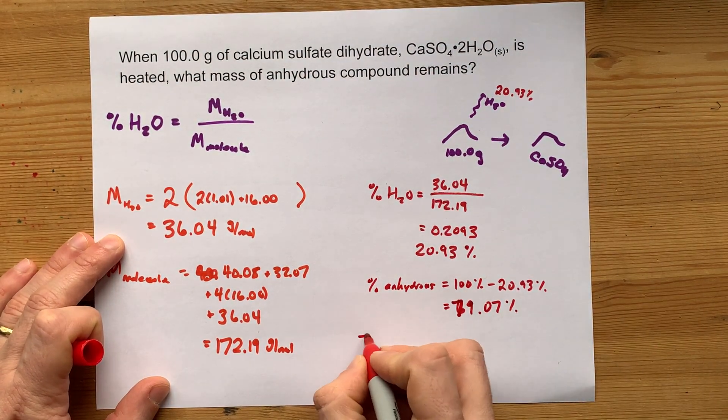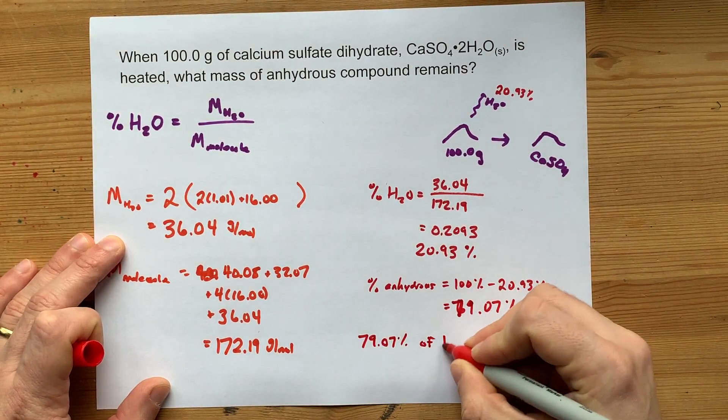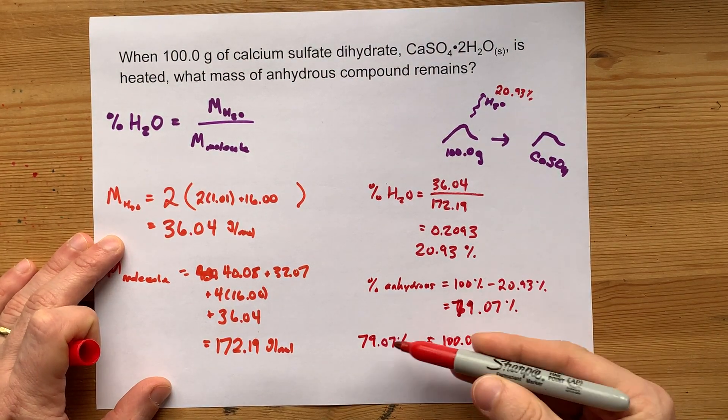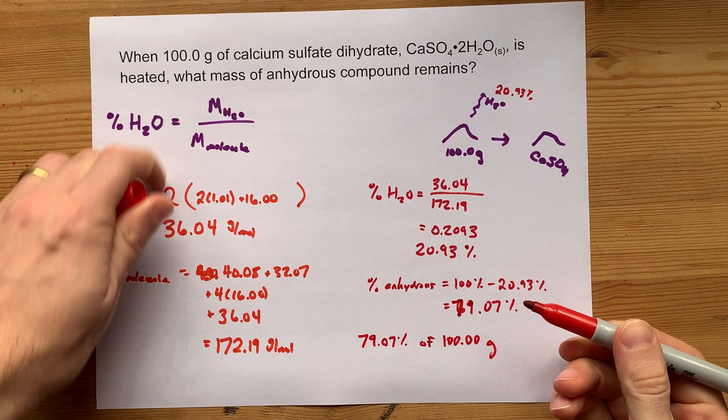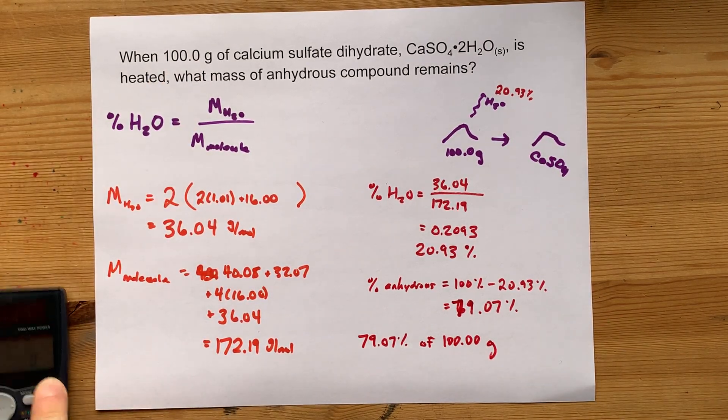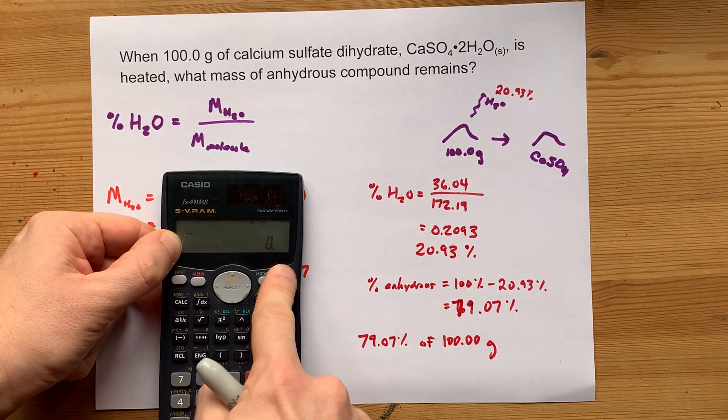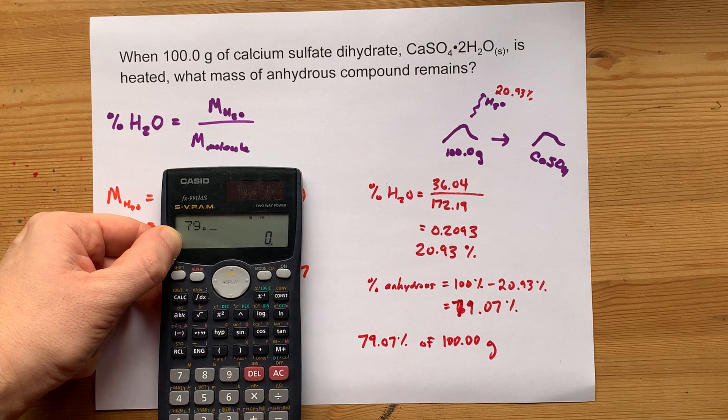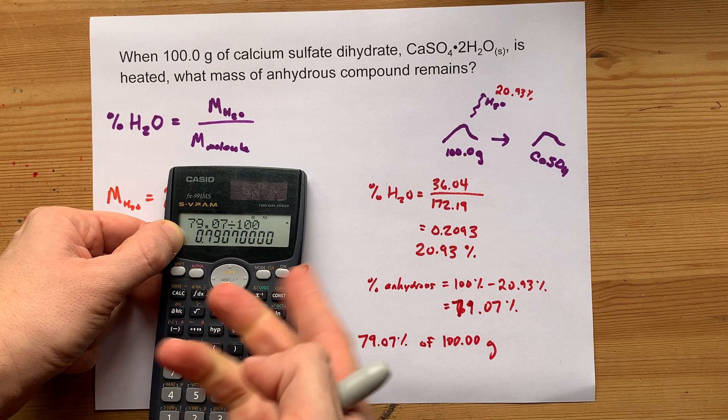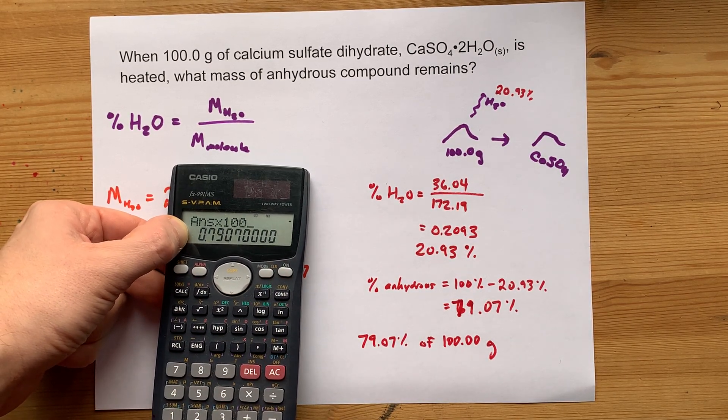So what we're left with is 79.07% of the original mass we were given. For me, it was 100, and so that's an easy number to take a percent of. But even if you were given some more obscure number, you would just end up doing this percent: 79.07 divided by 100 to get 0.7907. You know how to convert percents to decimals, and multiply it by the mass you were given.